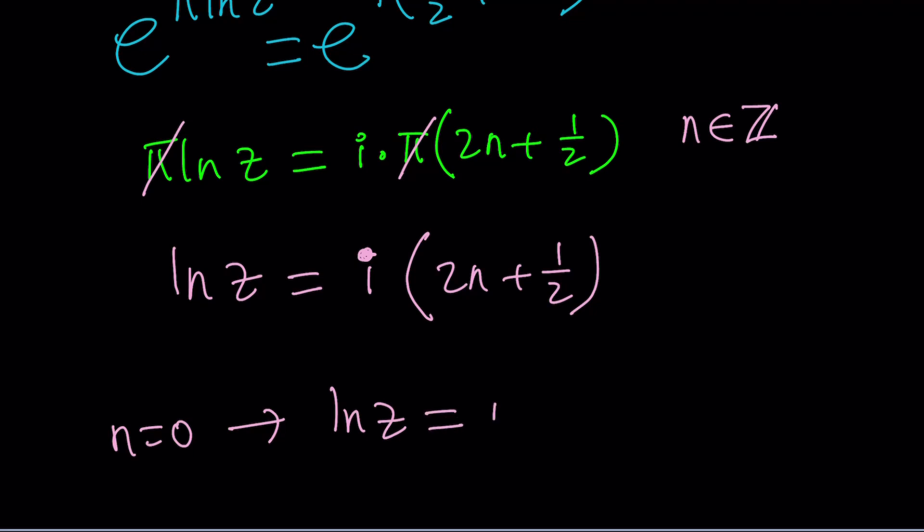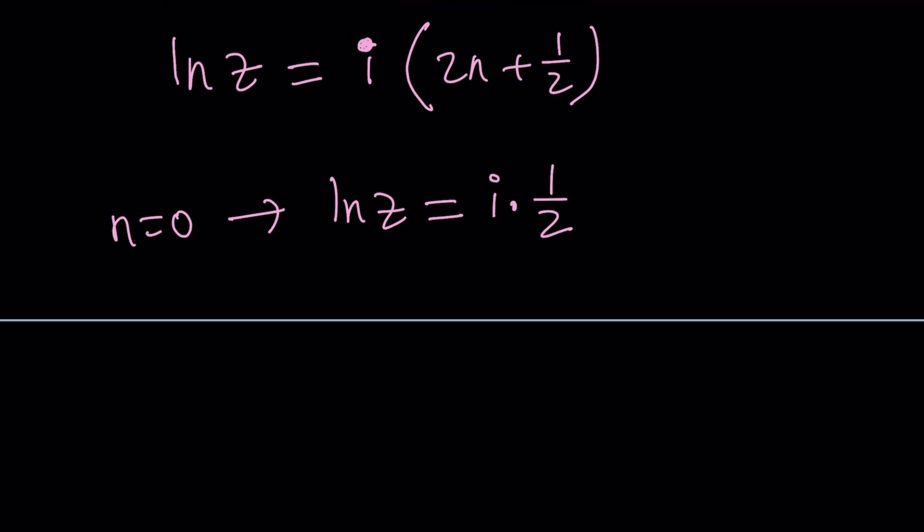ln z is going to be i times 1 half. How nice. So how do I convert this to z? Easy. Easy, right? Like easy.